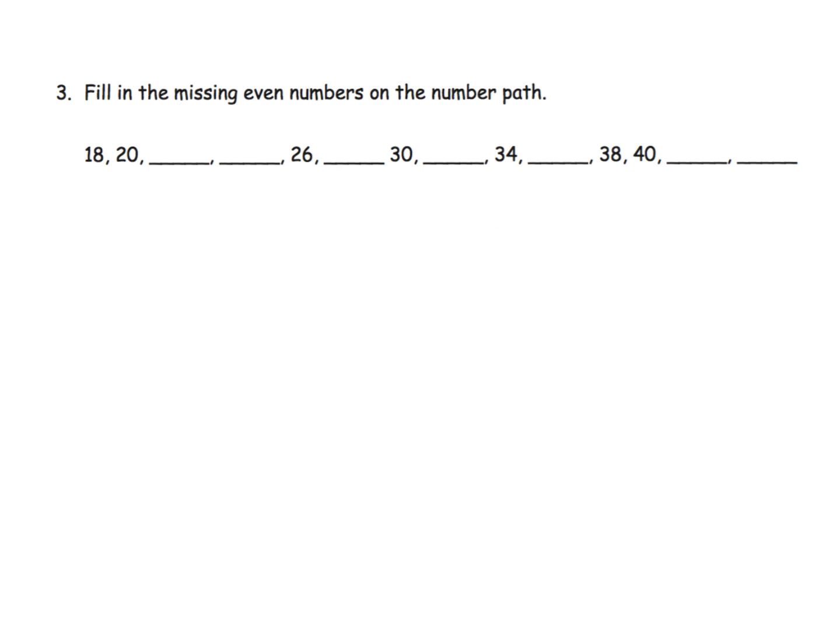Here we're going to fill in the missing even numbers on the number path. So you've got eighteen, and then you're going to go up to twenty, and then what are we going to do next? Now students are going to want to say of course twenty-one and then twenty-two, but then this would be twenty, not twenty-six. Because we're only supposed to be writing down the even numbers. So that means this is going to be twenty-two, and then you might whisper count twenty-three and then twenty-four.